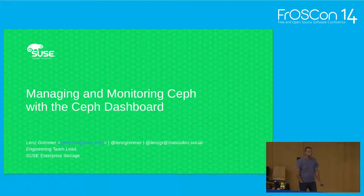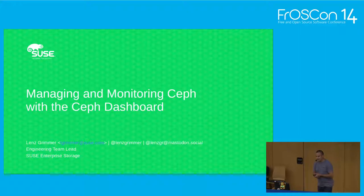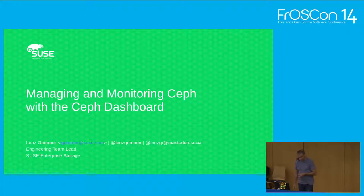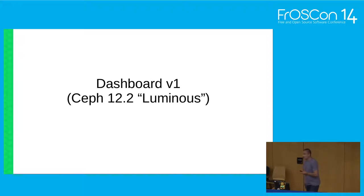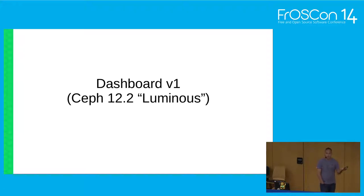Each Ceph release has a code name relating to an octopus — the Ceph developers like octopuses and use names of certain kinds of octopuses. The first version of Ceph that shipped with a dashboard was Luminous, released in August 2017 — about two years ago. That was the first time the Ceph project itself included a web-based interface. Back then it was really just a dashboard — you could only obtain read-only information to get a quick impression of how your cluster is doing.